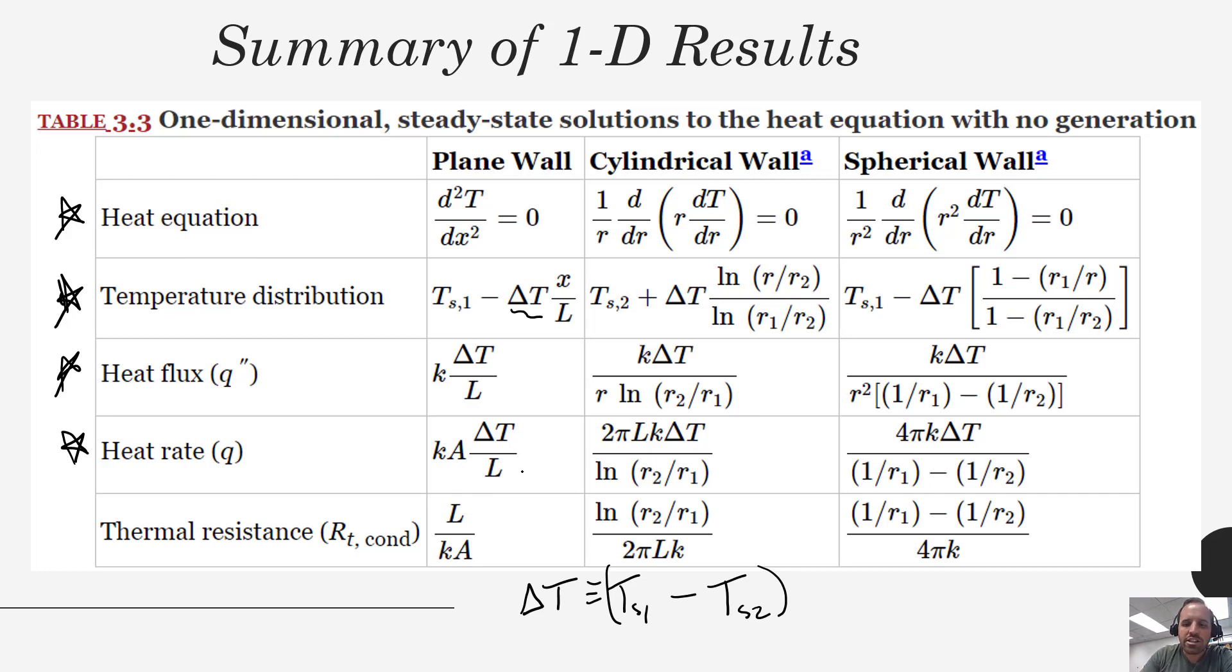Finally if we take those results and the fact that our heat rate is constant as long as we have a constant ΔT, we can take this part of the term and invert it to get our total thermal resistance for that part of the system. So for cylindrical we invert that and we get this, for spherical we invert that and we get our total spherical thermal resistance.